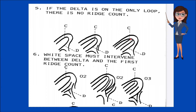Here the core is this one — do we have a ridge count? Yes, we have a ridge count here because there is an intervening ridge. Now number six: white space must intervene between the delta and the first ridge count. There must be a white space between the delta and the first count, and also a white space starting from the core. The ridge count shall start with the first ridge after the core and its white space. So we have two counts here, and we have three counts in this particular part.